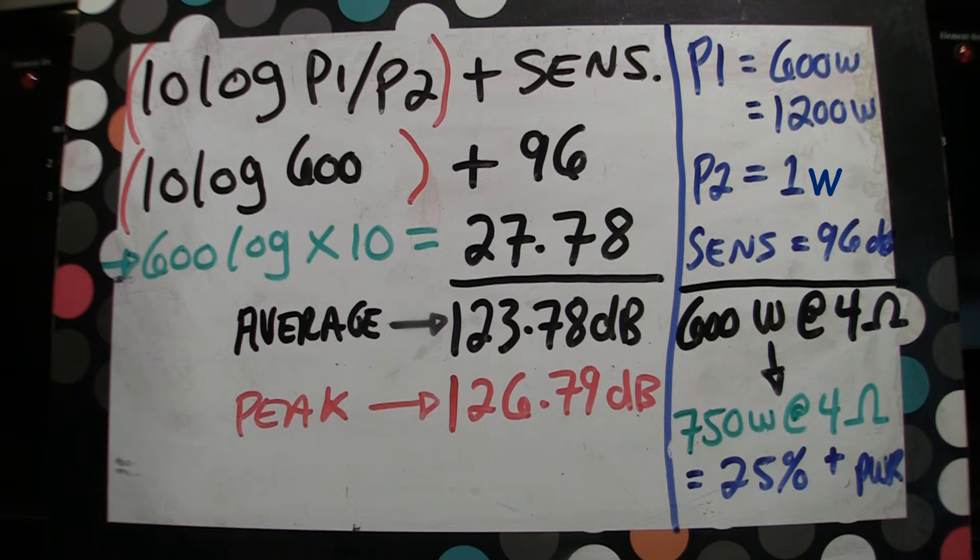Well, for years I've believed in the 25% plus power, meaning 750 watts at 4 ohms for this particular amplifier is a good match per channel for that speaker.